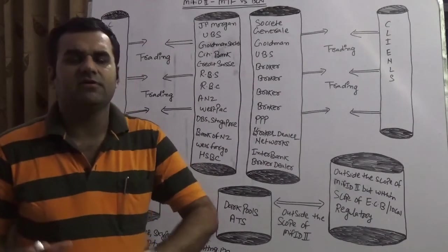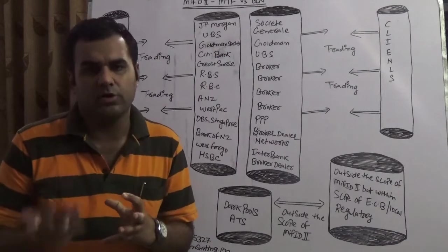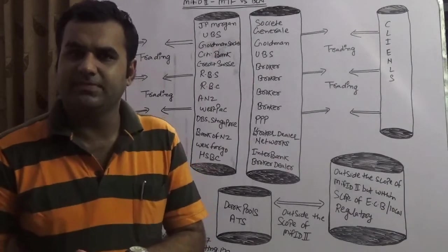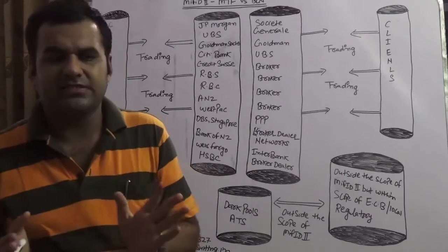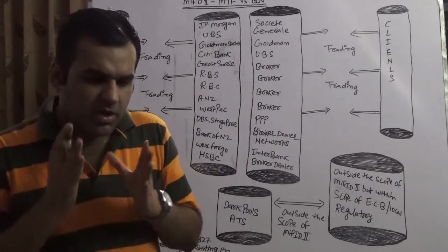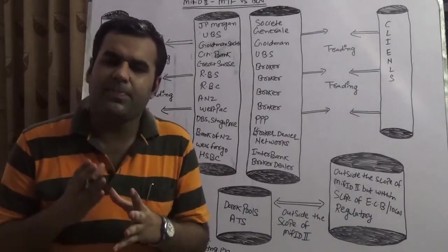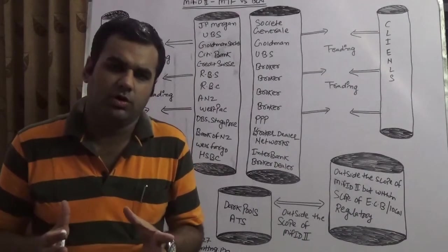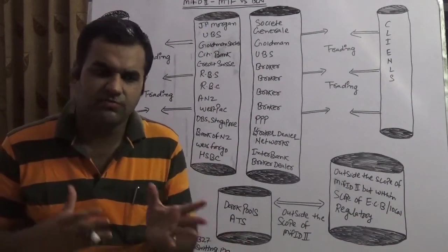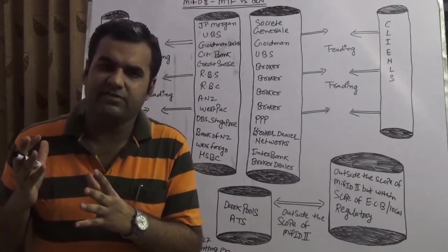Broker crossing network is a network which has been created by a broker. For example, Society General would have Alpha Y which is a BCN. There are many banks in the world who would have BCN in place because banks themselves play a multiple role in the financial market.